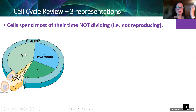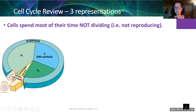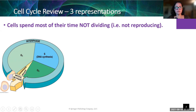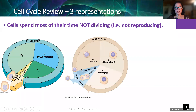Cells spend most of their time doing their jobs in G1 — they're not dividing. The cell starts out in G1, spends lots of time doing its job, and then at some point — this could be in a few hours or a few years — the cell moves into DNA synthesis, copying the DNA in preparation for dividing into two separate cells. Then it goes through G2, and finally into mitosis and cytokinesis: that's the active cell division.